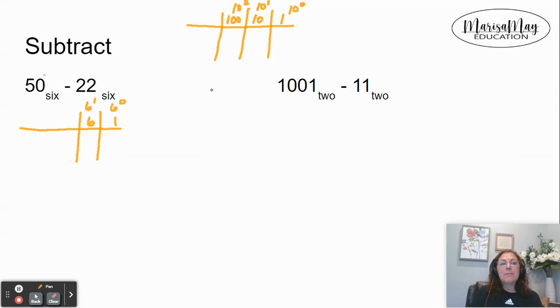So if we look at the number 50 in base six, that is telling us we have five groups of six and zero ones. So five groups of six, if you multiply those together, will give you 30 in base 10.